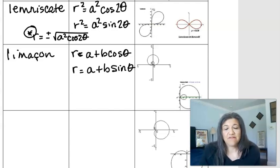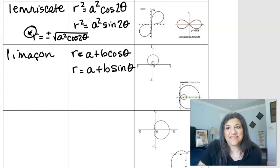Or r equals a plus b sine theta. So play around with the a and b. Make a bigger than b. Make a less than b. Put a subtraction sign, and see what happens when you use the sine and when you use the cosine. Just kind of play around with that and investigate the limaçon.